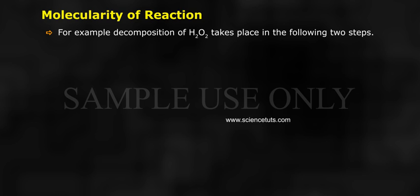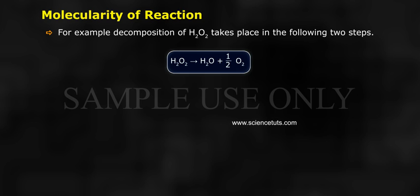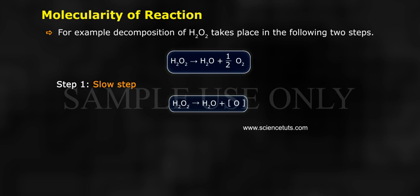For example, decomposition of H2O2 takes place in the following two steps. Overall: H2O2 gives H2O plus half O2. Step 1 (slow step): H2O2 gives H2O plus nascent oxygen. Step 2 (fast step): Two nascent oxygen atoms combine.